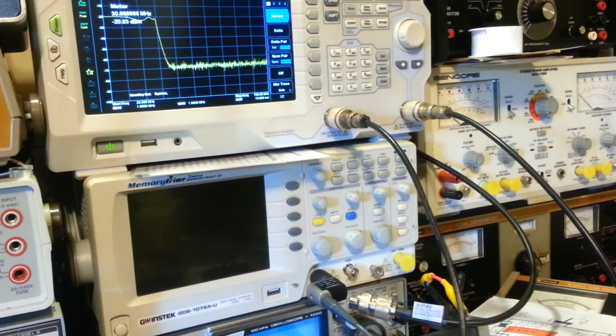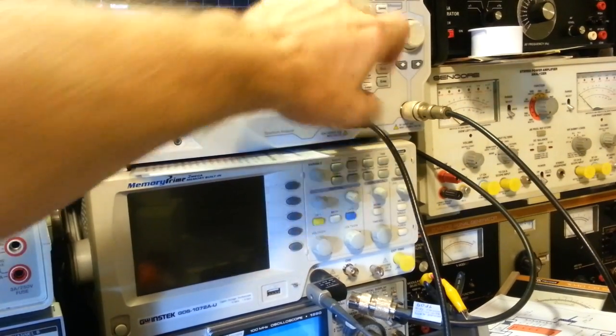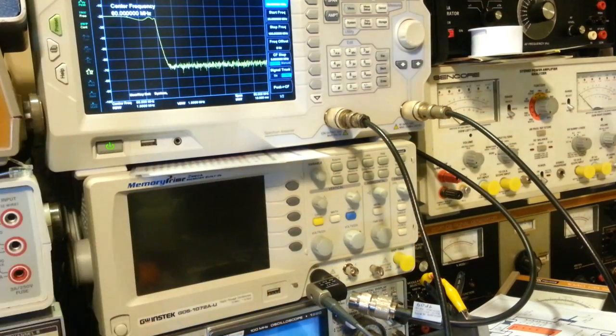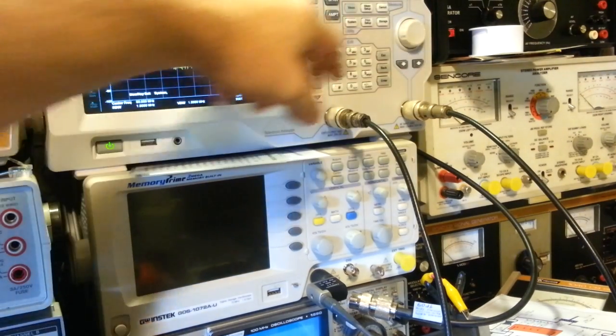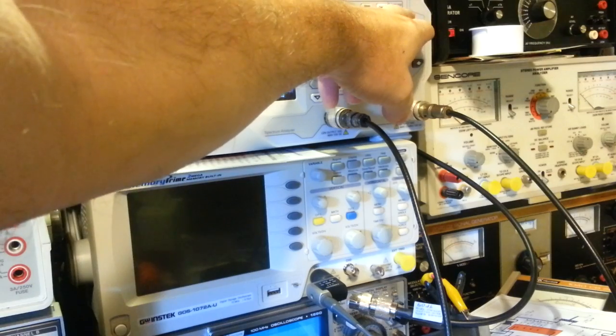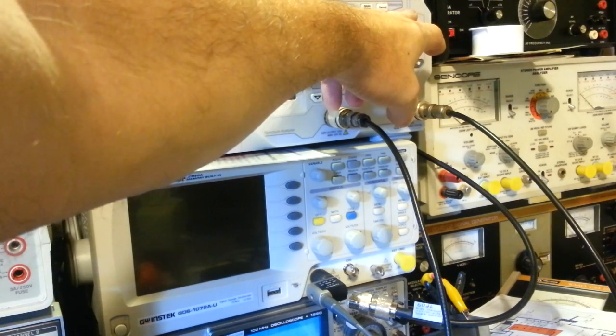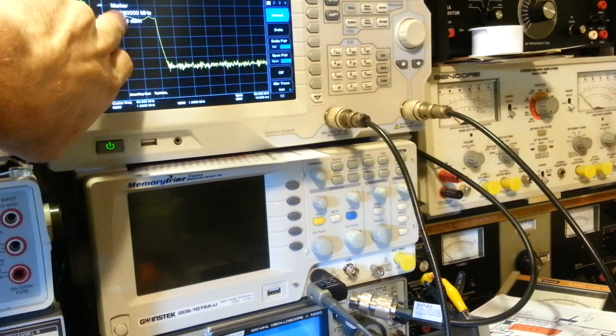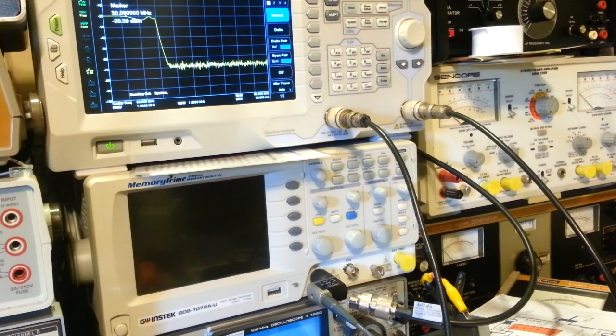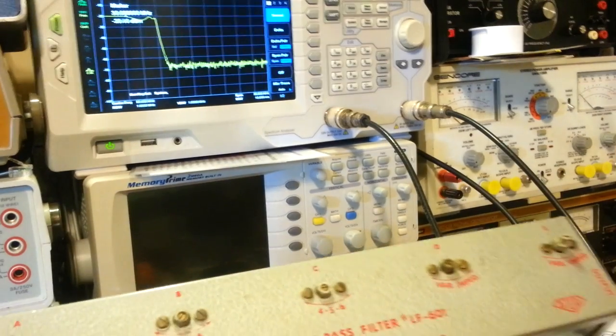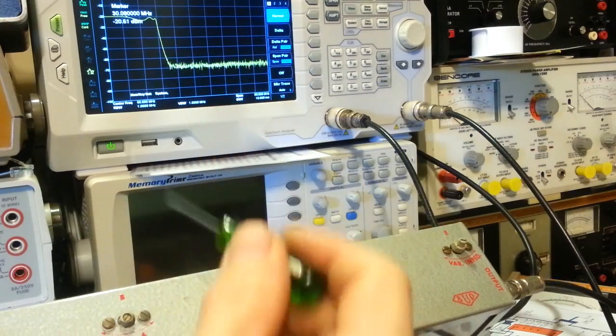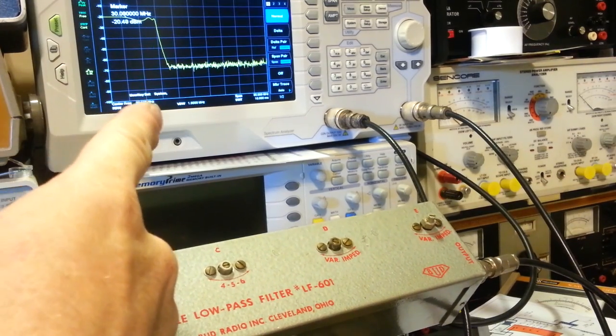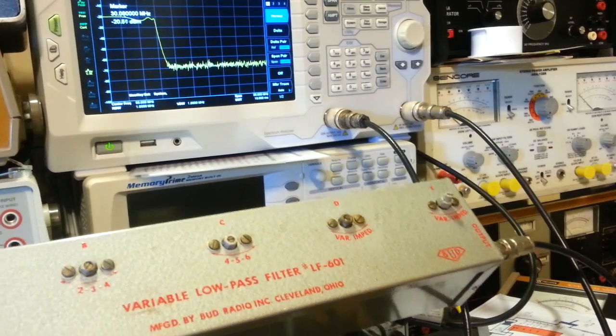Currently I have the span start frequency at 20 megahertz, stop frequency at 100. Left side of the screen is 20, right side is 100 megahertz. I have a marker set at 30 megahertz. We want to have minimum effect there but maximum over here. I can see it dip down not much. It's currently being fed a minus 20 dBm signal, so it's only down a half a dBm.